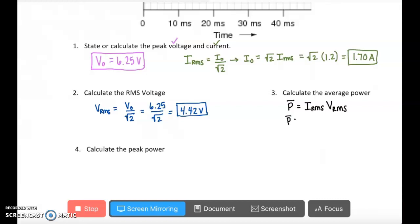And I've chosen this equation because I already know IRMS, that's the 1.2 amps that I was given. And I just solved for VRMS in part 2. So my average power comes out to be 5.31 watts.